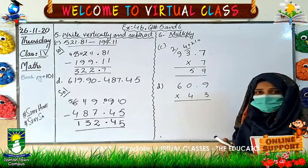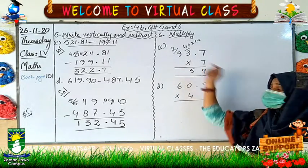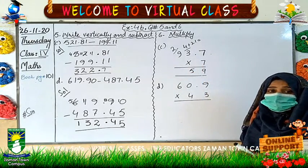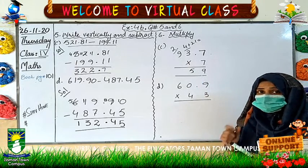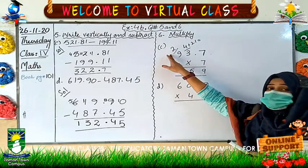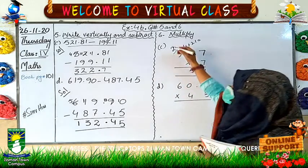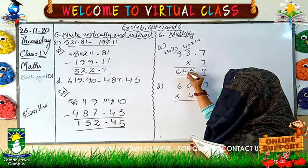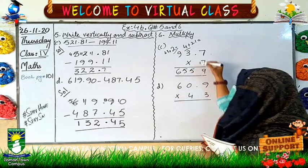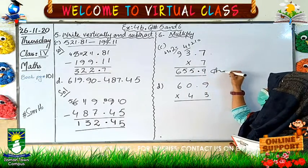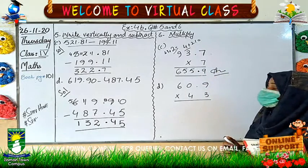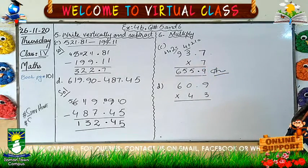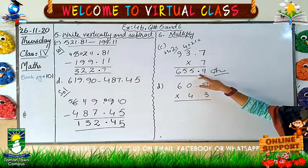Here I have to multiply 7 with 9. When I do 7 nines — 7 nines are 63. Again, what do I have to do? 63 plus 2 is 65. At last, I have to follow my decimal point. I got my answer: when I multiplied 93.7 with 7, I got my answer 655.9.